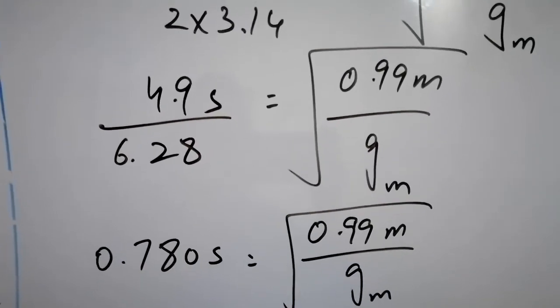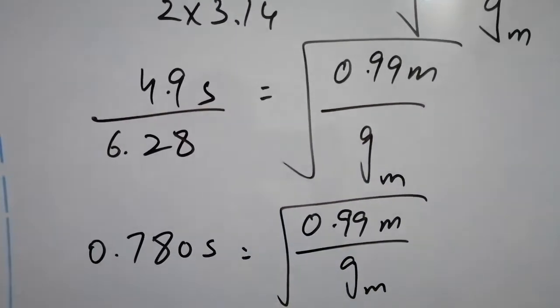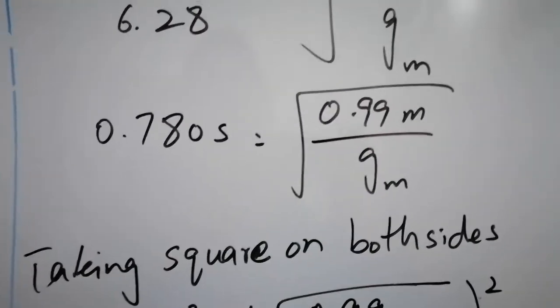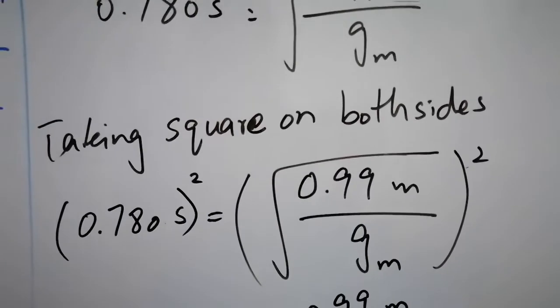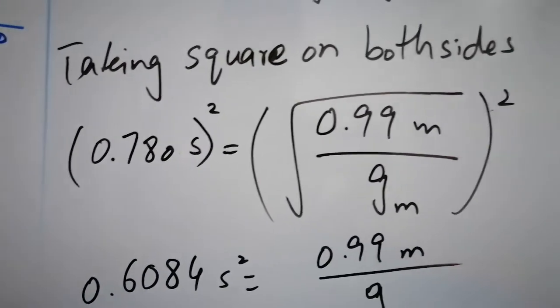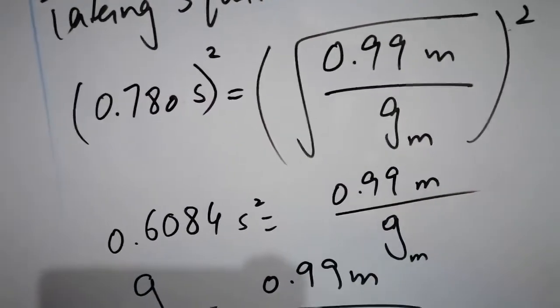Now we have to find the value of gravity of the moon. And this is under the square root. We have to remove the square root. So there will be 0.780. It is also the square root. This square root has been cancelled.